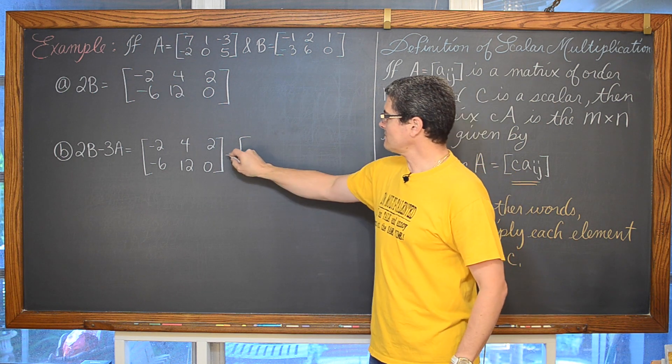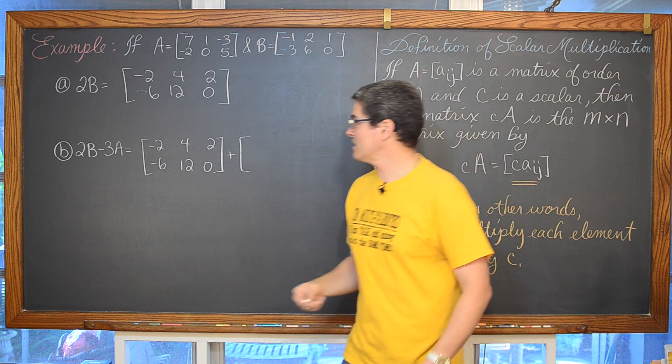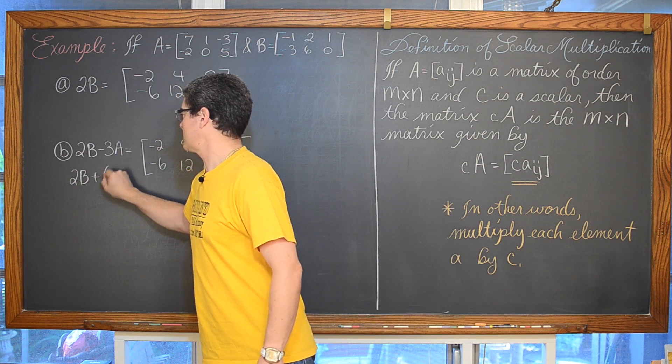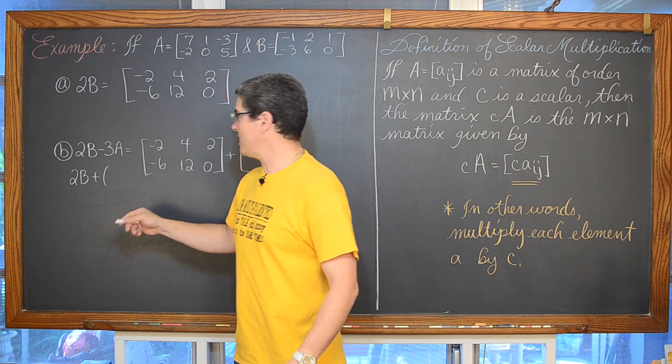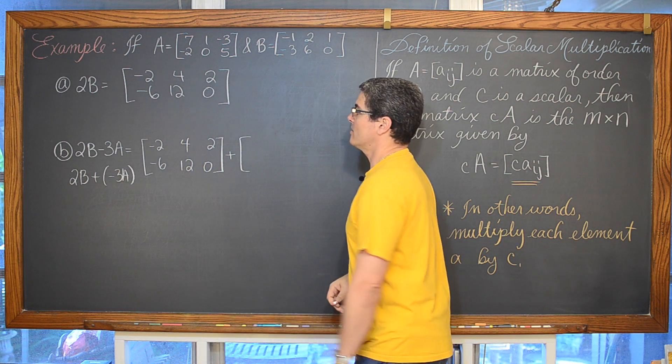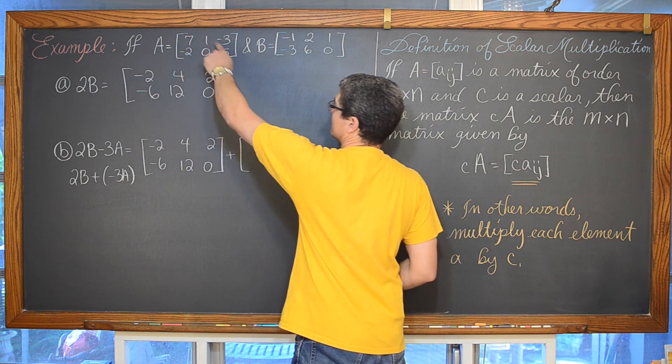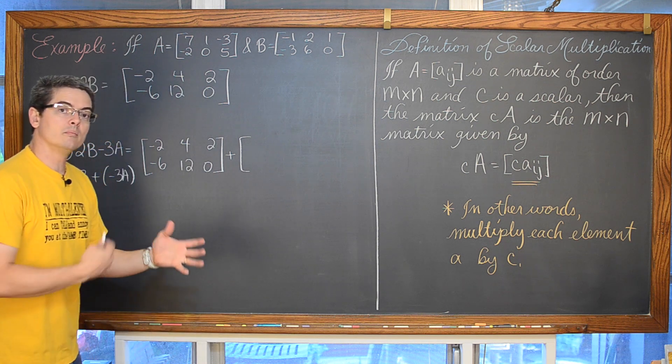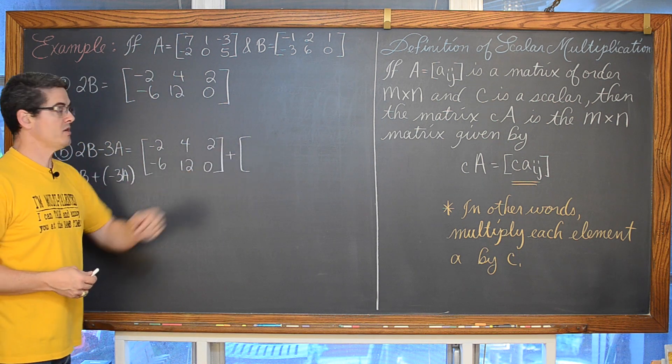But like in the previous board when we were adding and subtracting matrices, you have to remember to check that negative as you go to each of those terms in this second matrix. I think it would be easier if we do sort of like a plus negative.